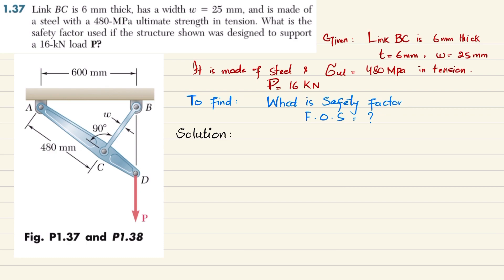Let's start with the solution. You can see that due to this load, structure AD will move downward. This is causing this member to exert a force like FBC. We will use bar ACD as free body diagram.